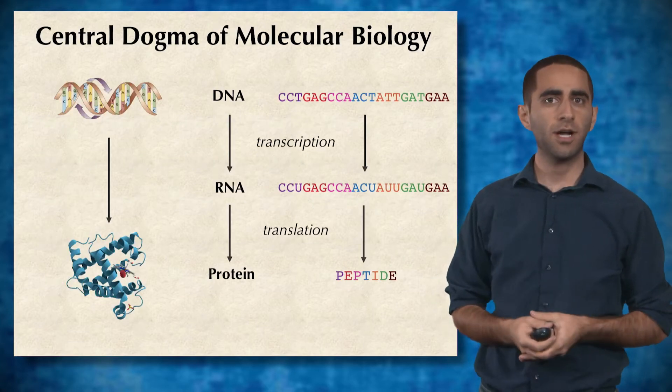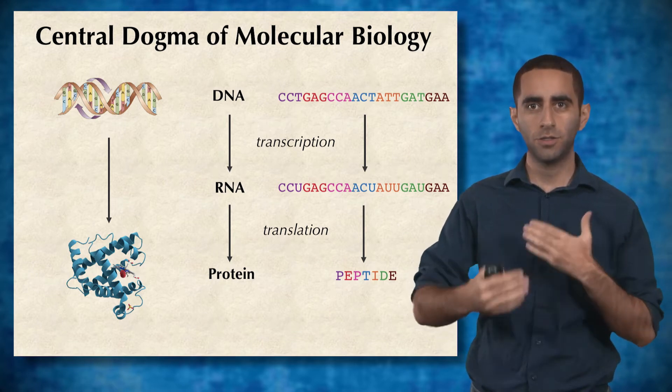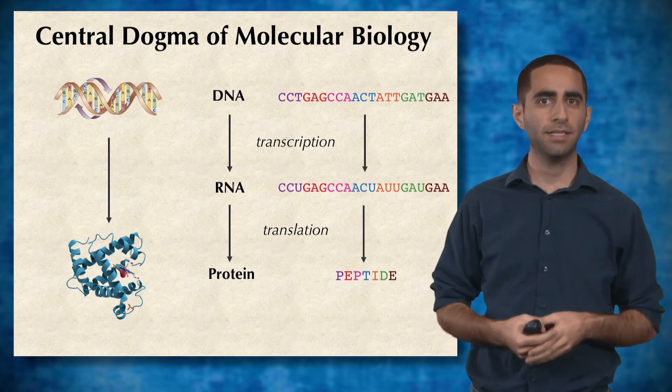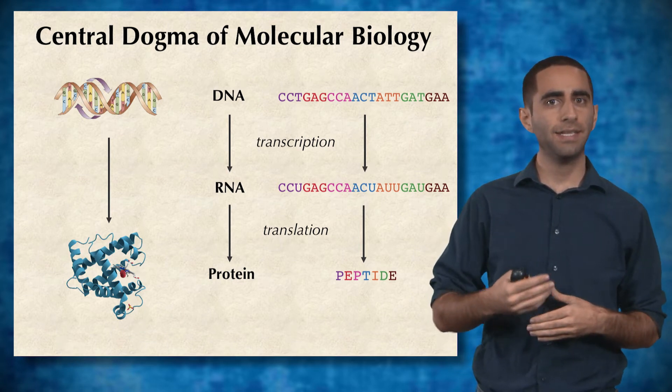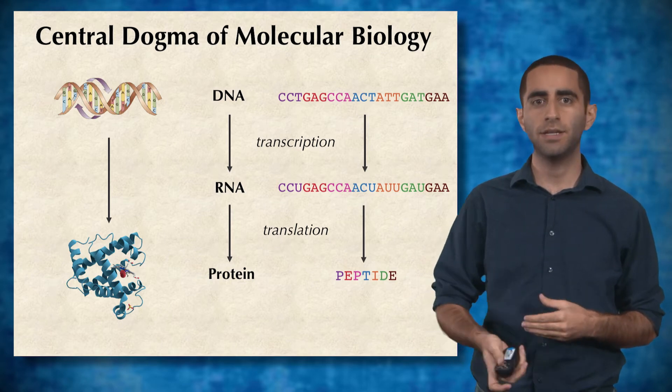If you recall, in the central dogma of molecular biology, we have this forward-flowing transition of information where we start with DNA, that's the template, and then DNA is transcribed to RNA, and RNA is translated to protein.